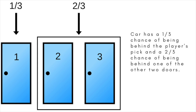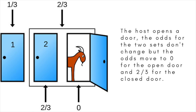Now, suppose you switch. In other words, you choose a door, wait for Monty to expose a goat, then switch to the other remaining door. This means that you win if the door you chose to begin with had a goat behind it. The odds that your initial choice had a goat is two-thirds, so you're twice as likely to win the car if you switch.